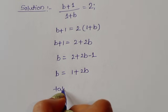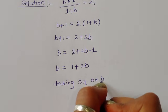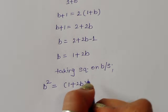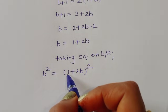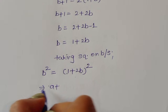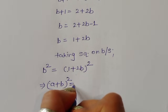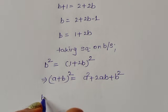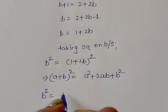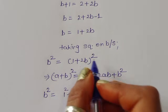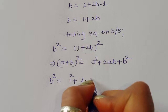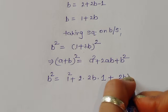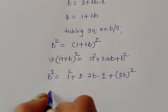Now taking square on both sides, we get b squared is equal to (1 + 2b) whole square. Using the formula (a + b)² = a² + 2ab + b², we expand: b² equals 1 squared plus 2 times 1 times 2b plus (2b) squared.